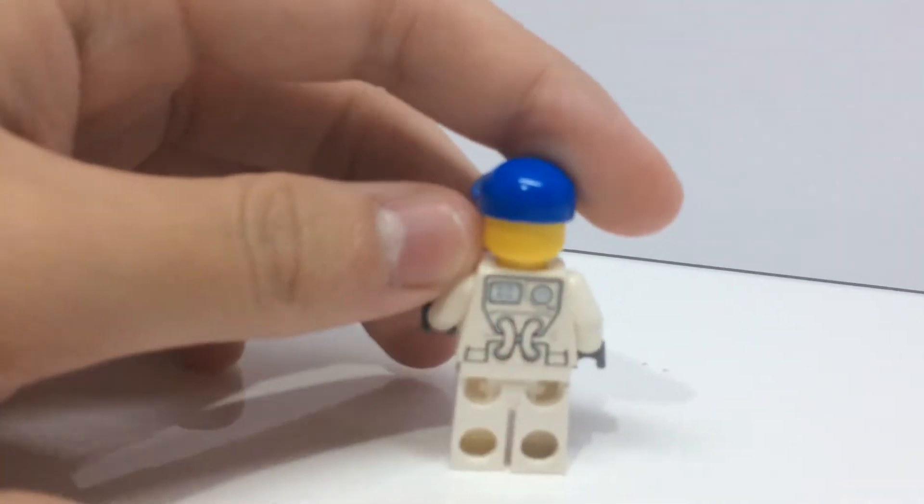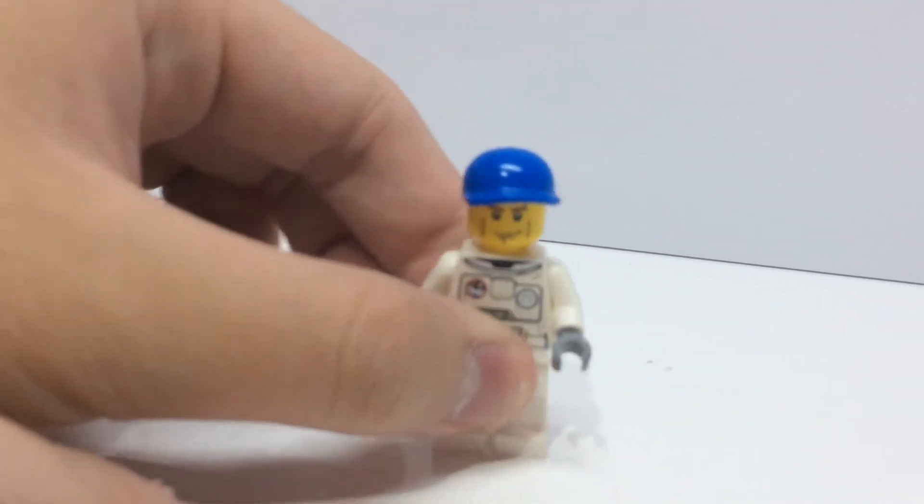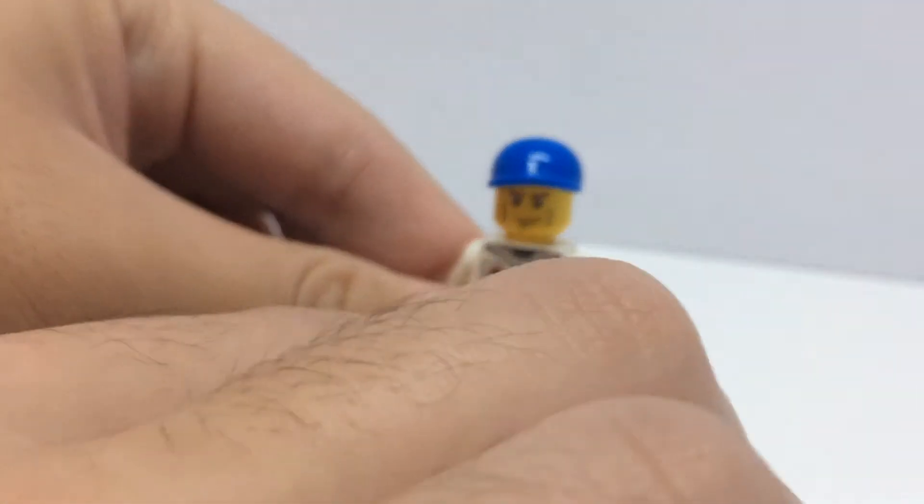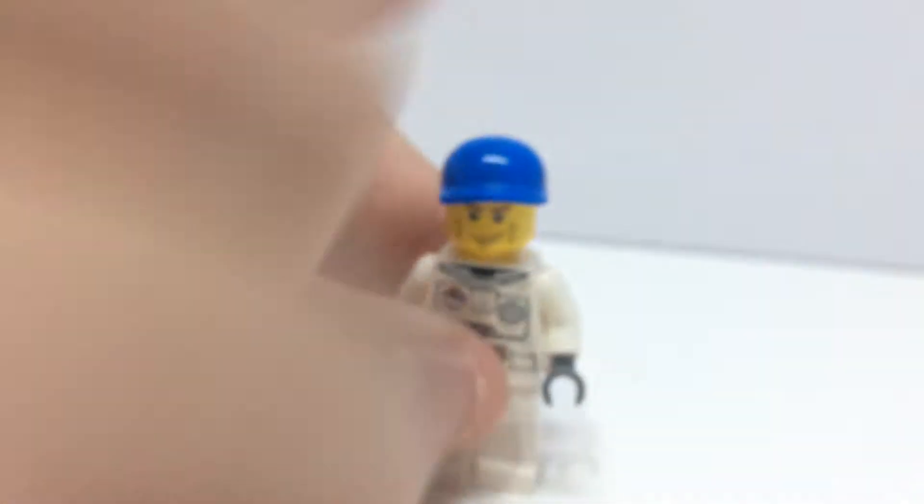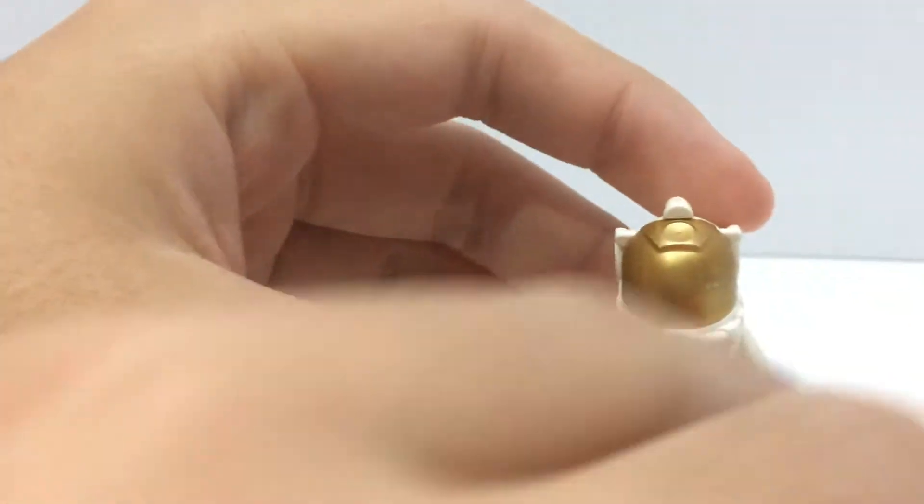This is a bit different from the 2015 one which is in the polybag version, but this is a box version. It comes with the blue cap and if you take that out, you can also use the astronaut helmet like that. It's also the same from the 2015 one.